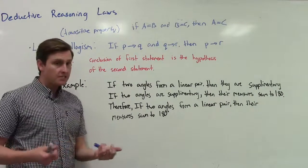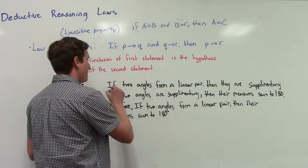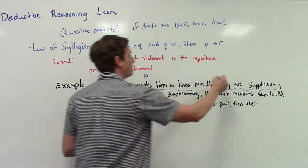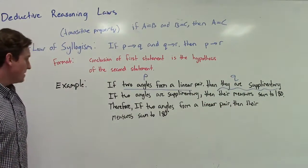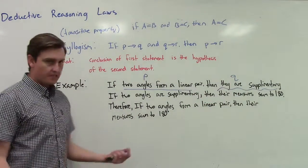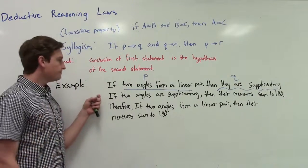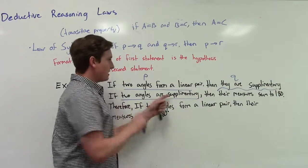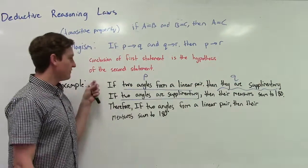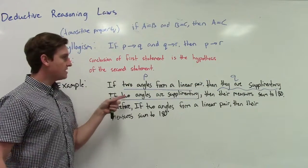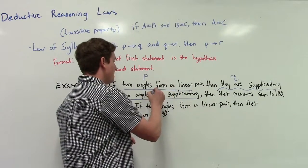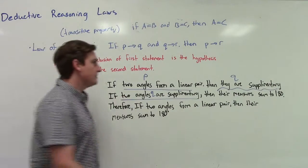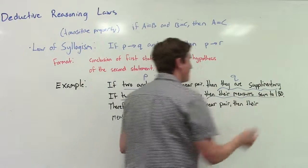Here's an example: 'If two angles form a linear pair, then they are supplementary.' That's a conditional statement — two angles form a linear pair is p, and they are supplementary is q. Second statement: 'If two angles are supplementary, then their measures sum to 180.' Two angles are supplementary is the same as the conclusion of the first statement, so we still call it q.